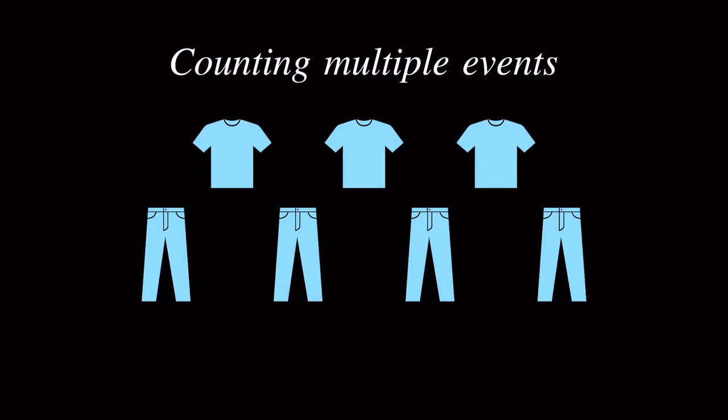To begin, let's consider how we can count multiple events. For example, let's say that we have three shirts and four pants, and we want to count how many choice of outfits we can wear, so a selection of one of each. A good way to start is to just list out all the choices, and through that we might be able to find a simpler method.